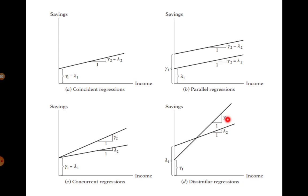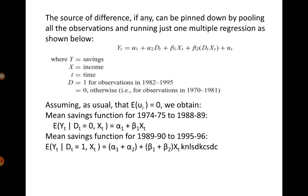The Chow test does not tell us the source of the difference. It can only tell you whether there is a difference in the regression function pre- and post-liberalization, but it cannot tell you what sort of difference exists — whether it is a difference in the intercept terms, the slope terms, or both. The dummy variable technique allows us to discover and understand the source of the difference by running just a single regression.